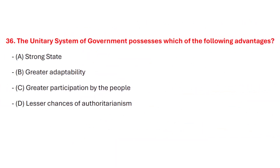Question 37. The unitary system of government possesses which of the following advantages? Correct answer is option A: Strong state.